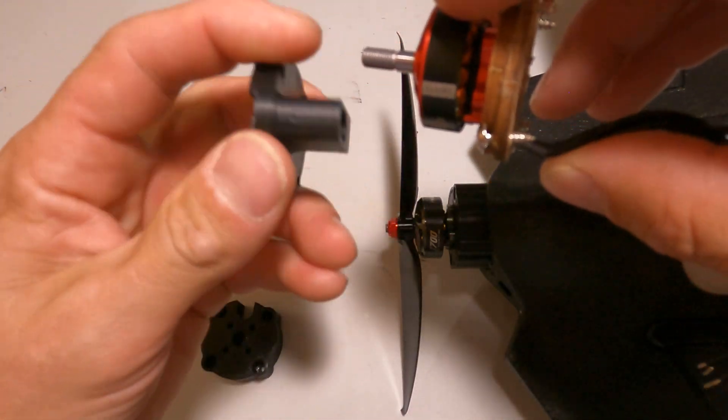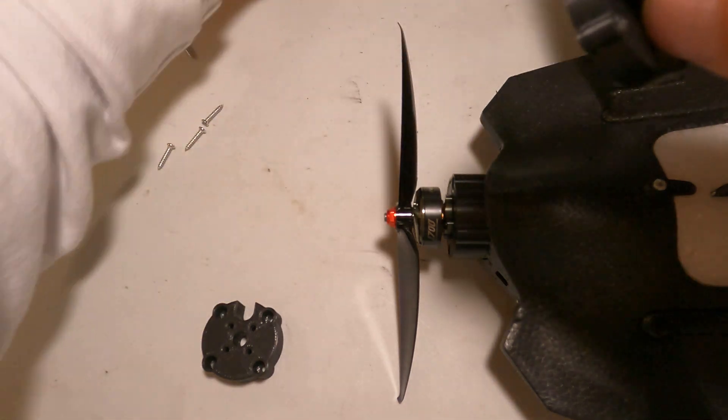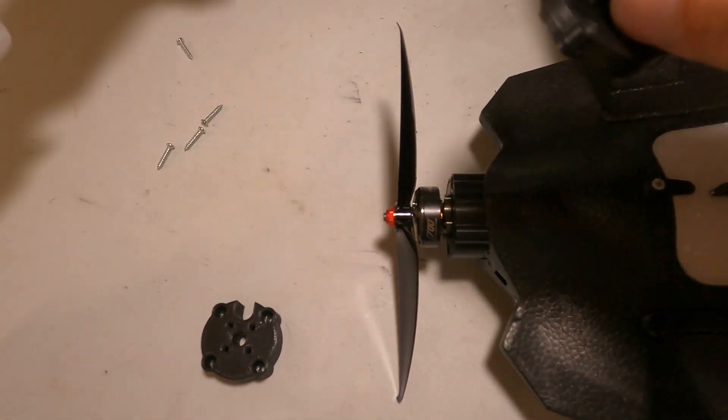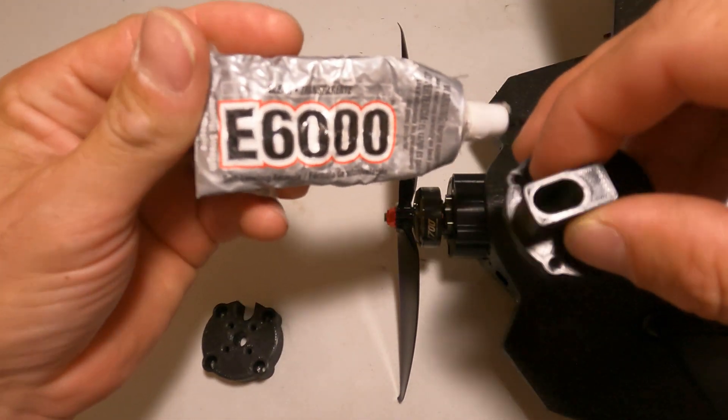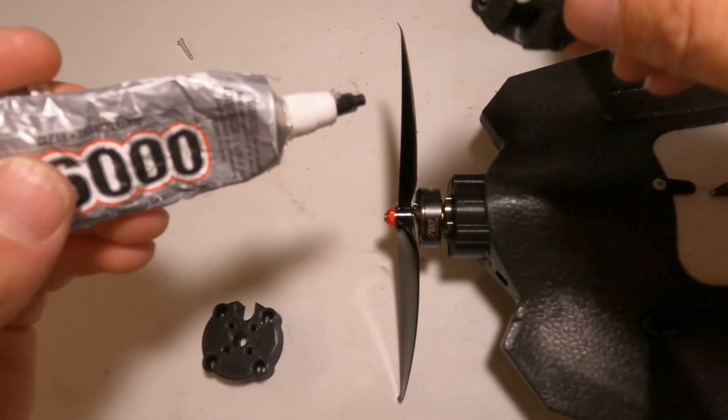This is glued onto the Dolphin, and the way we glue this is we use E6000. You can use whatever you want, but you're just going to smear it all over everywhere, stick it in, and let it set up for 12 hours before going any further and flying it.